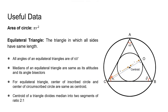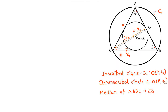The medians of an equilateral triangle are the same as its altitudes and its angle bisectors. Here, line segment CO is one of the medians of the triangle and it passes through its centroid. For an equilateral triangle, the centers of the inscribed circle and the circumscribed circle both coincide with the centroid. The centroid divides the median into segments in a 2 to 1 ratio. The inscribed circle is C1 with center P and radius R1; the circumscribed circle is C2 with radius R2, also centered at P.